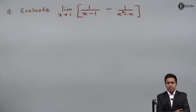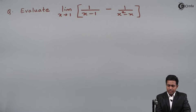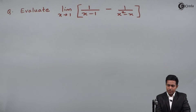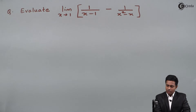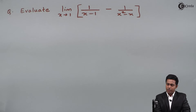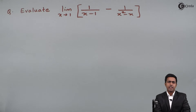Hello everyone. In this problem we have to evaluate the limit as x tends to 1 of 1 upon x minus 1, minus 1 upon x squared minus x.